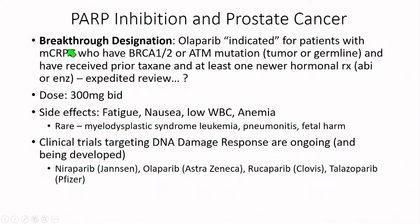PARP inhibition in prostate cancer has breakthrough designation. It will likely be indicated for patients with metastatic disease who have either BRCA1, BRCA2, or ATM mutations — either in the tumor or germline — and have received a prior taxane and at least one new hormonal therapy. This is under expedited review. The dose is 300 mg twice daily orally. Side effects are significant: 11% of patients stopped due to toxicity in one study; fatigue and asthenia in up to 70%; frequent nausea, less frequent vomiting; low white counts and anemia. Rarely, it can induce myelodysplastic syndrome or acute myelogenous leukemia, pneumonitis, and fetal harm is expected.